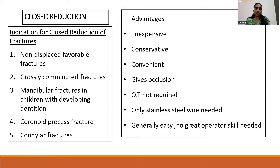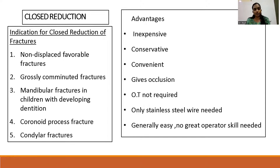Next we speak about the different methods of reduction: closed reduction and open reduction. Closed reduction is indicated when the fracture is undisplaced or favorable, meaning the segments are not separate from each other. In grossly comminuted fractures with multiple pieces, if we try to do an open reduction the bone segments might end up non-viable. So in such cases, closed reduction is more indicated. In mandibular fractures in children with developing dentition, we do closed reduction so that we do not disrupt the tooth eruption.